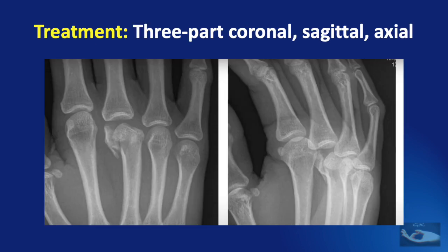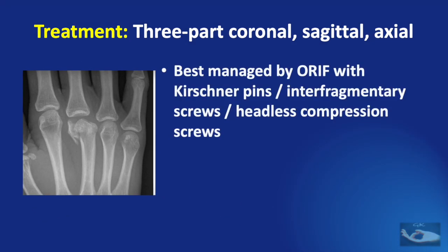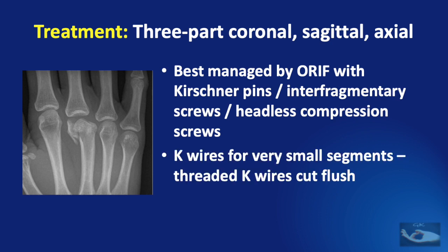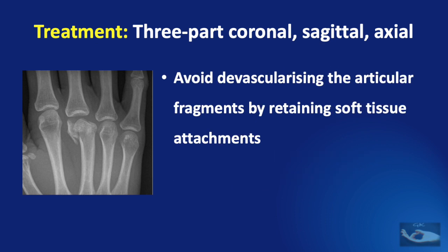A unique type of metacarpal head fracture is the three-part fracture, occurring in the coronal, sagittal, and axial planes. These are best managed by open reduction and internal fixation using Kirschner wires, interfragmentary screws, or headless compression screws. K-wires are used for very small segments and ideally should be threaded K-wires cut flush. To avoid devascularizing the articular fragments, it is important to retain soft tissue attachments.